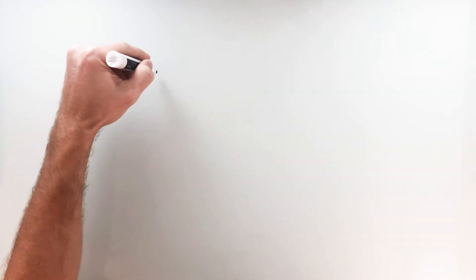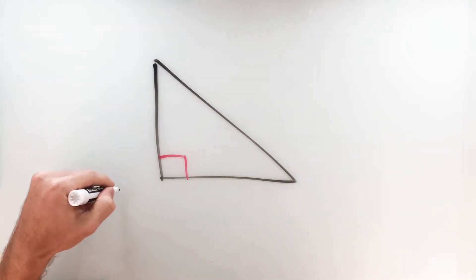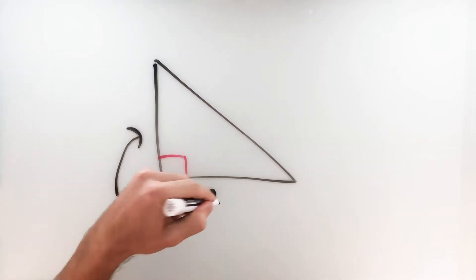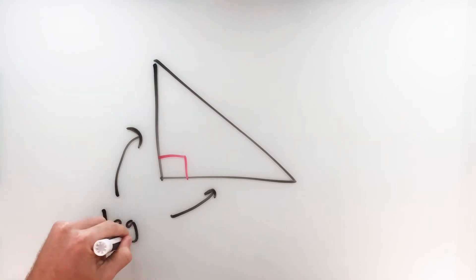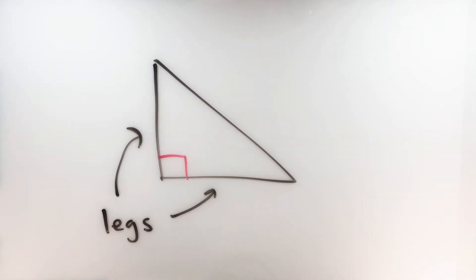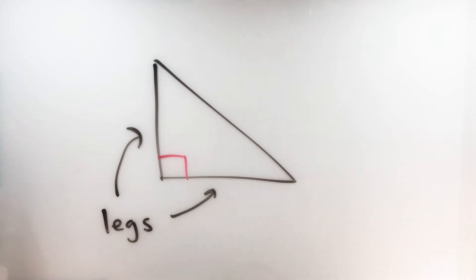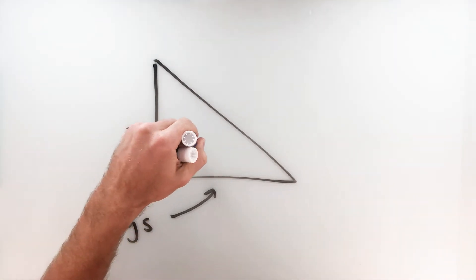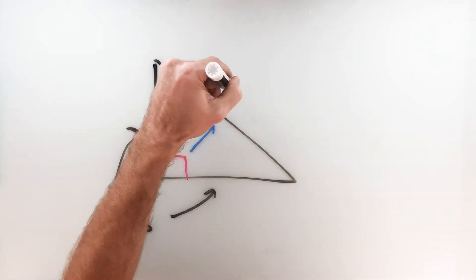A quick review on right triangles: what makes a triangle a right triangle is, of course, a right angle. The two sides that are included with that right angle are called the legs of a right triangle. And then the third side — the longest side, which is opposite the right angle — this longest side is called the hypotenuse.